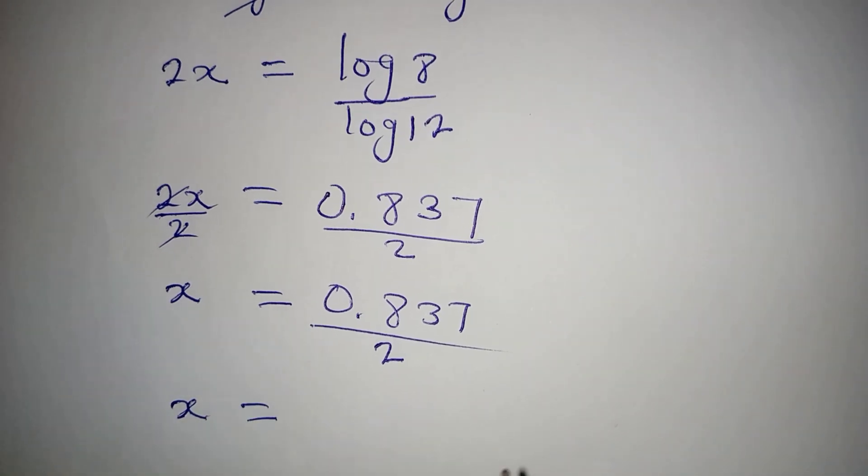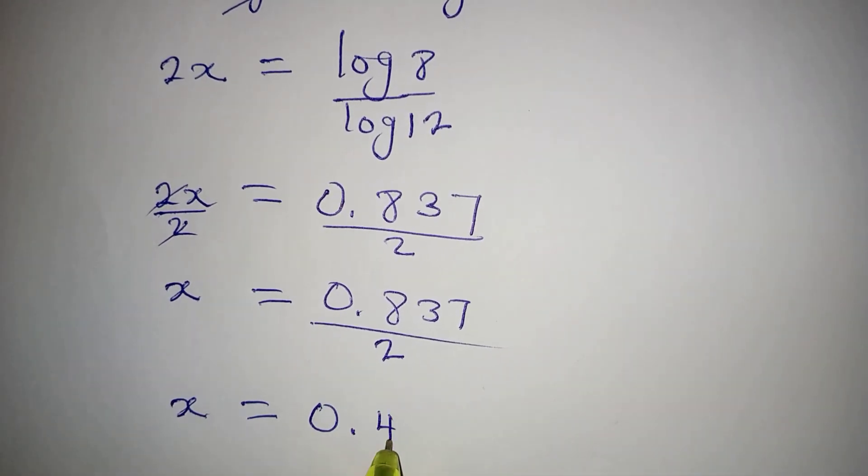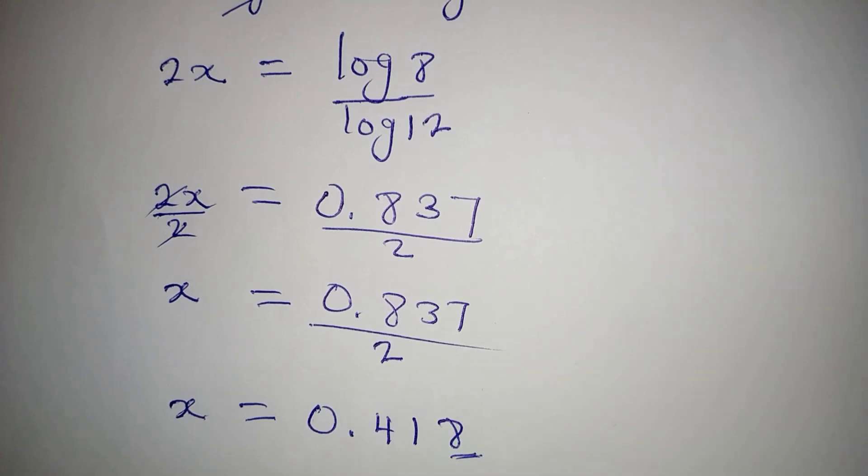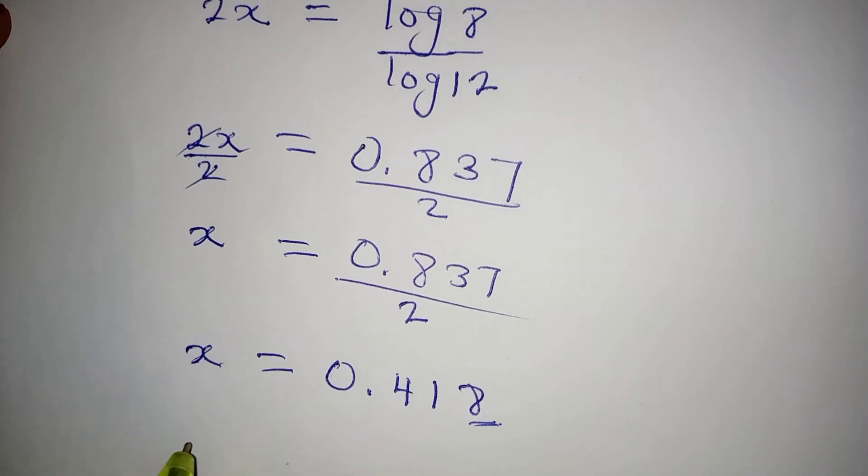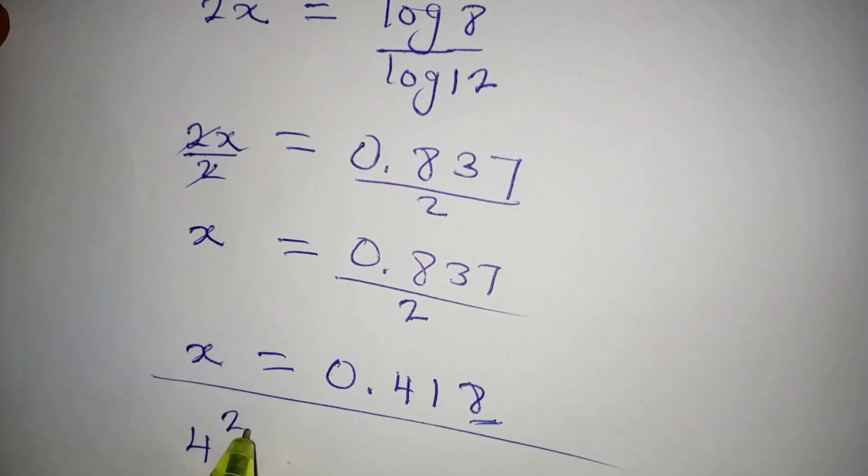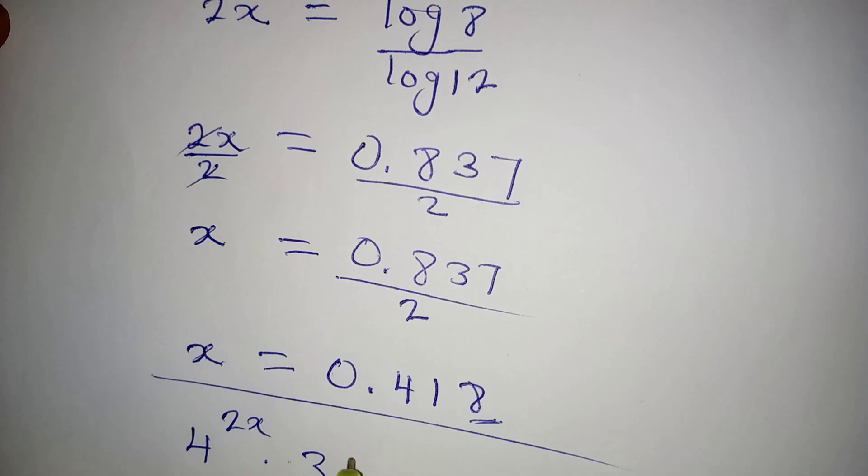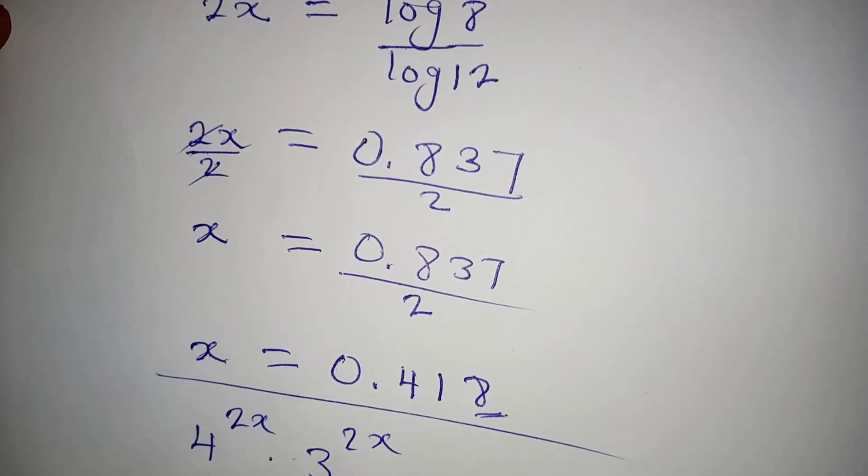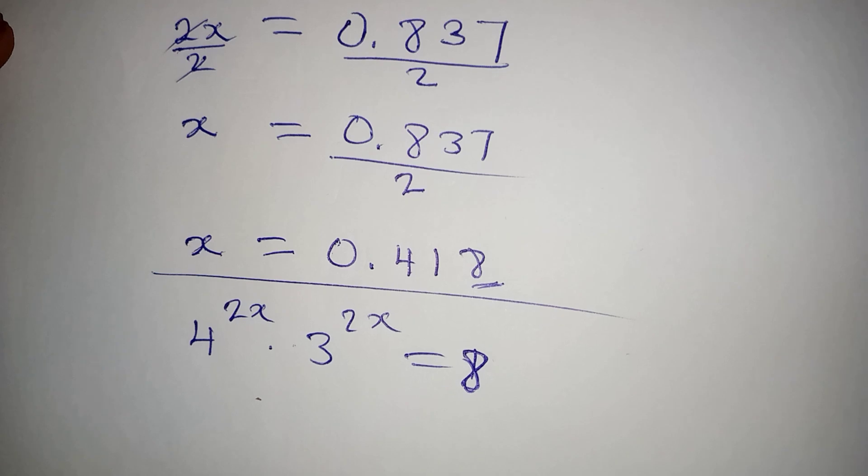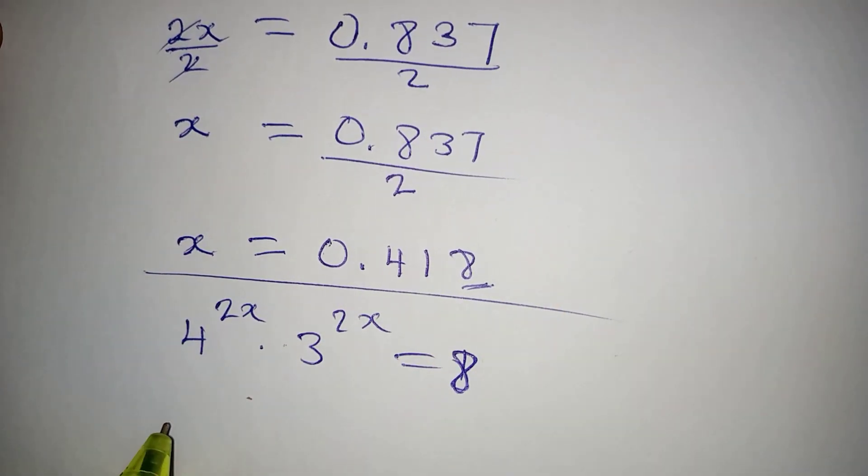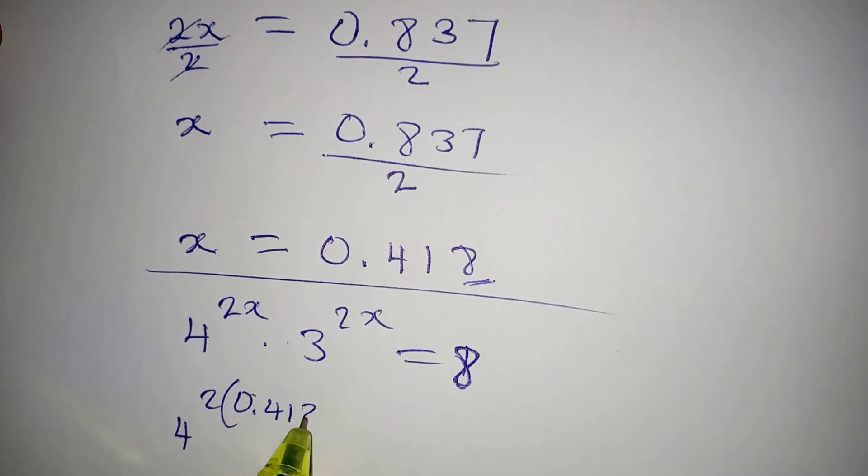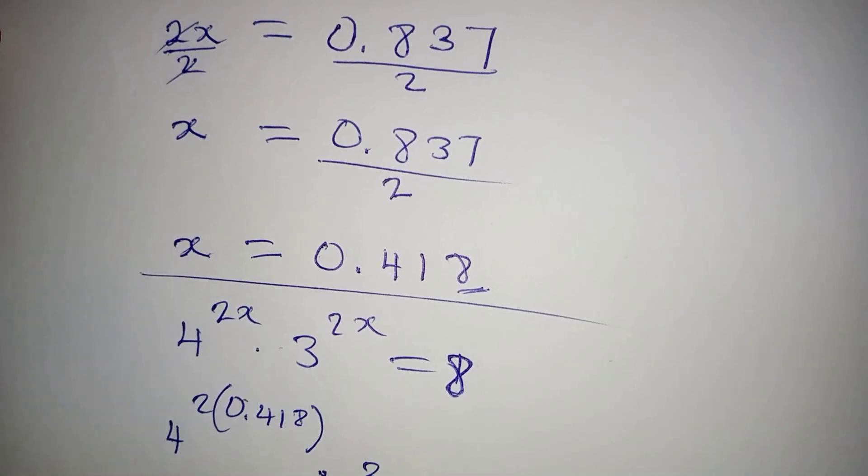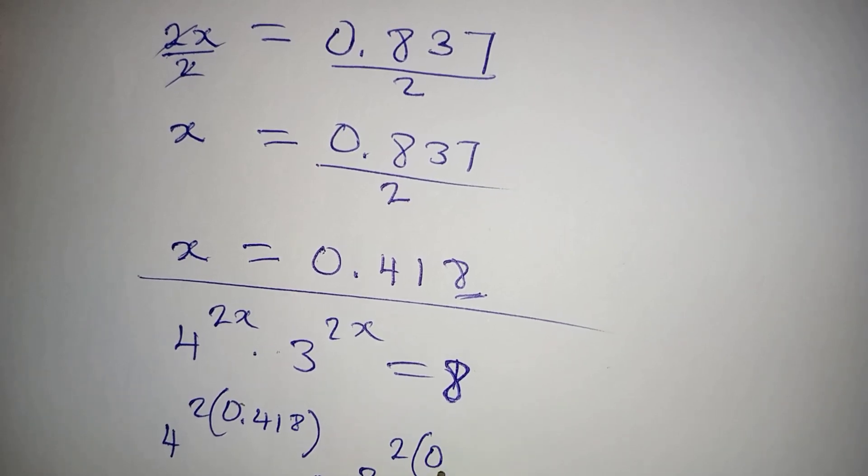Now let's put this back into the equation and see. We had 4 to the power of 2x multiplied by 3 to the power of 2x equal to 8. In this case, our x is 0.418, so we have 4 to the power of 2 times 0.418 multiplied by 3 to the power of 2 times 0.418.